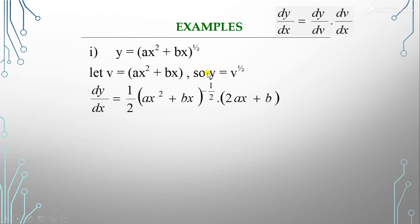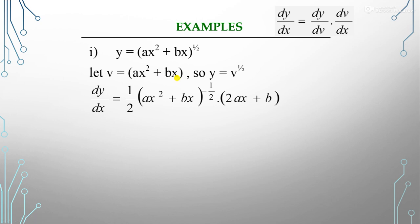Now y is a function of v, so we find dy/dv. Differentiating v^(1/2) gives (1/2)v^(1/2 - 1) = (1/2)v^(-1/2). Since v is a function of x, we find dv/dx by differentiating ax² + bx with respect to x, which gives 2ax + b.